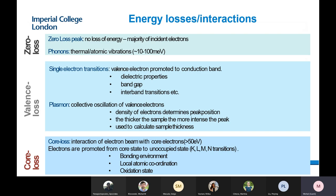These are the energy losses or interactions that may happen in your sample. We divide those interactions into three regions: the zero loss region, the valence region, and the core loss region. We'll talk about each one.